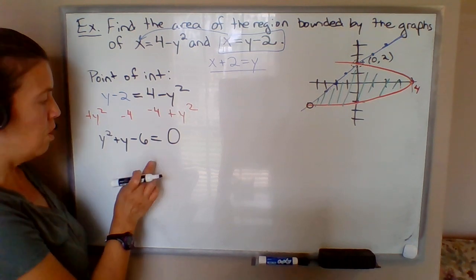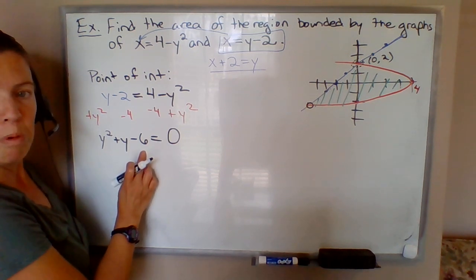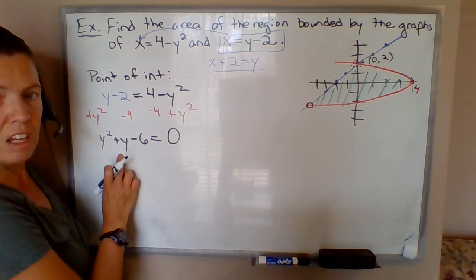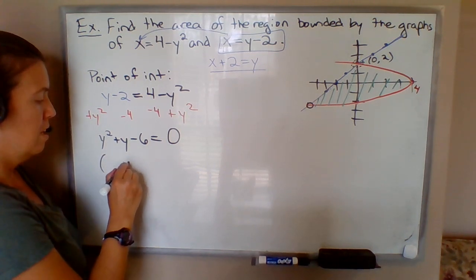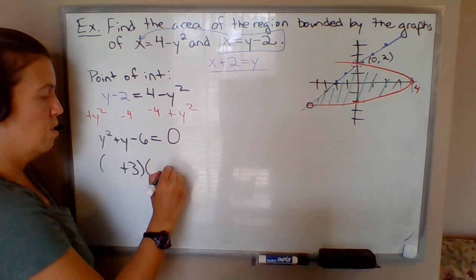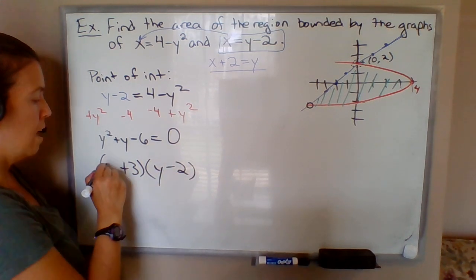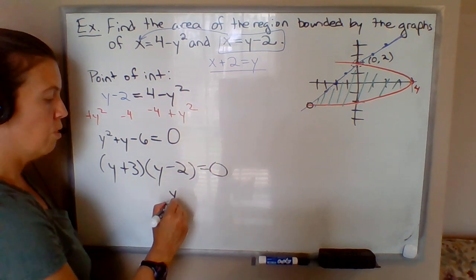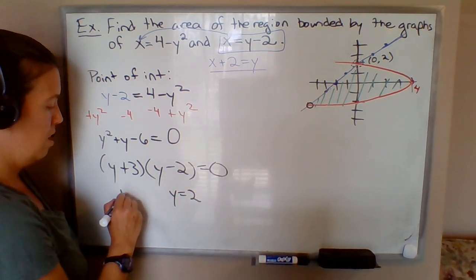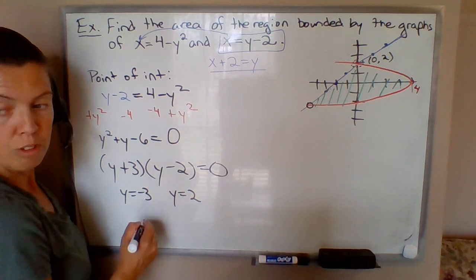So that's going to give me y² + y - 6 = 0, when you combine like terms. Now we're solving a quadratic equation. We want to find two numbers whose product is -6 and the sum is positive 1. That'll be positive 3 and negative 2. So those are your factors. Set each factor equal to 0: y = 2 and y = -3.